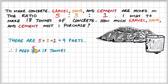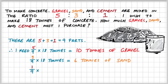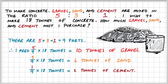I need five-ninths of 18 tons, which works out to 10 tons of gravel. Three-ninths of 18 tons, which is six tons of sand. And finally, one-ninth of 18 tons, which is two tons of cement. And that's how to use ratios to divide quantities. I'll see you in the next one.